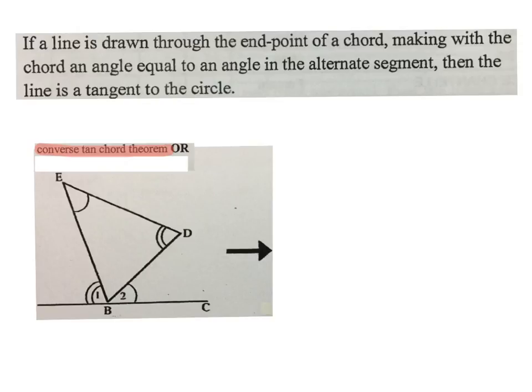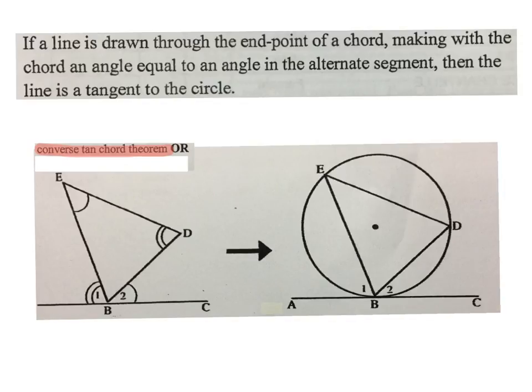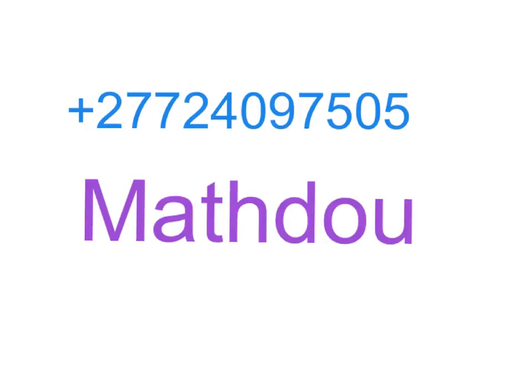Now what you need to understand is if you have a triangle, no circle at all, and a line hitting it, and that angle there is equal to that angle, a circle will fit around and touch. And if that angle over there is equal to that angle over there, a circle will be touching there and that will be a tangent to that circle. Your abbreviated reason will be converse of the tan chord theorem.